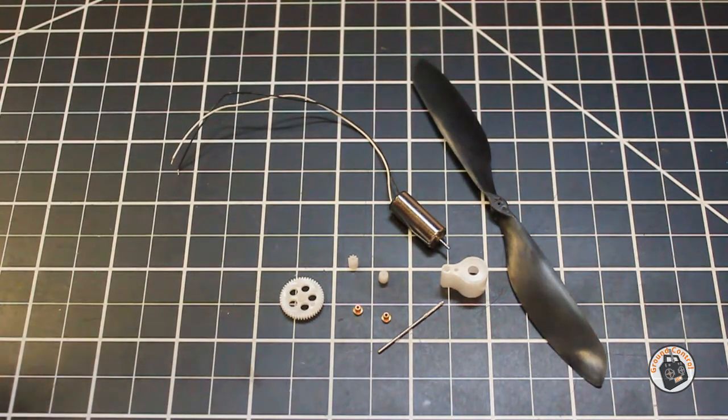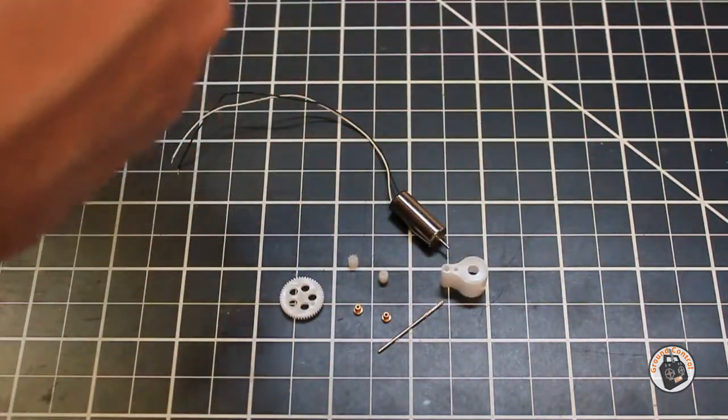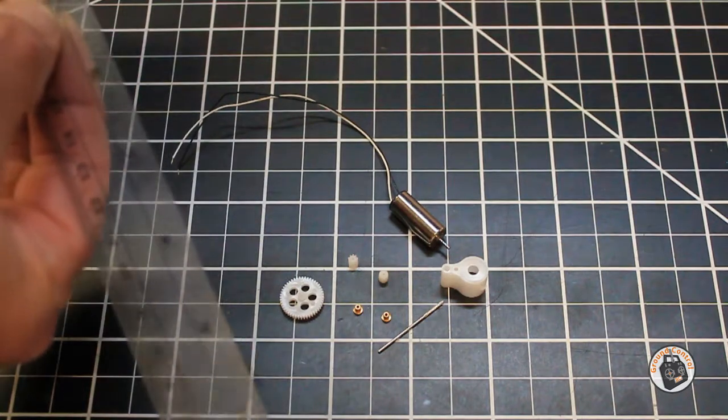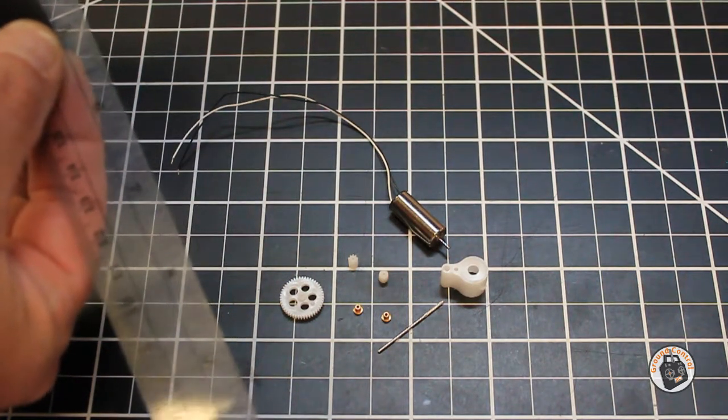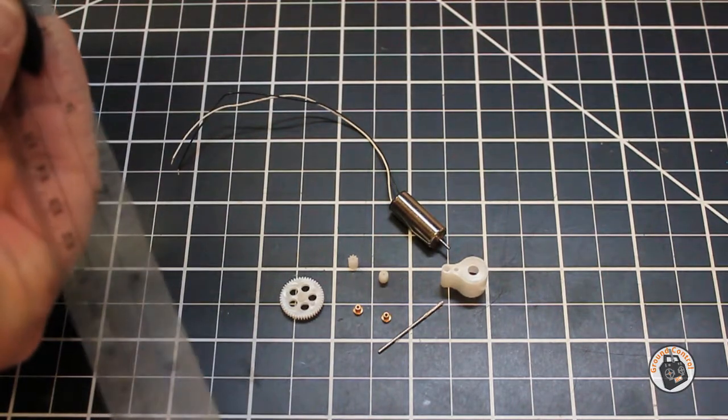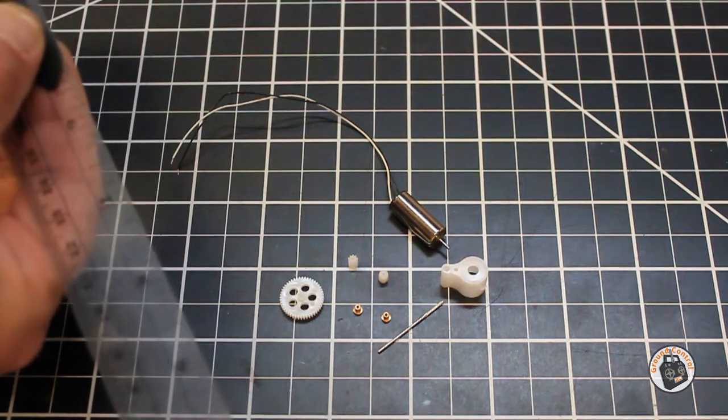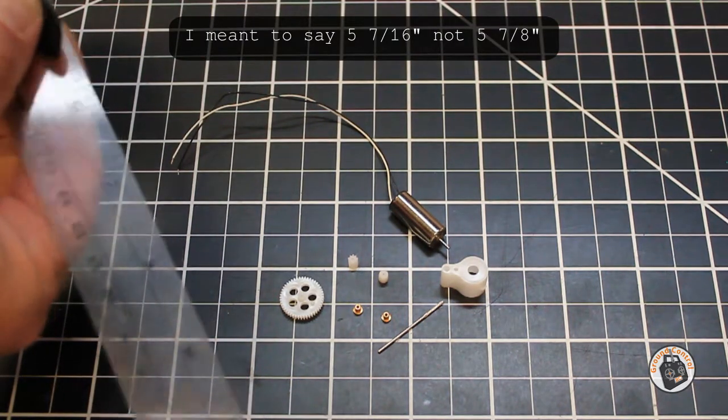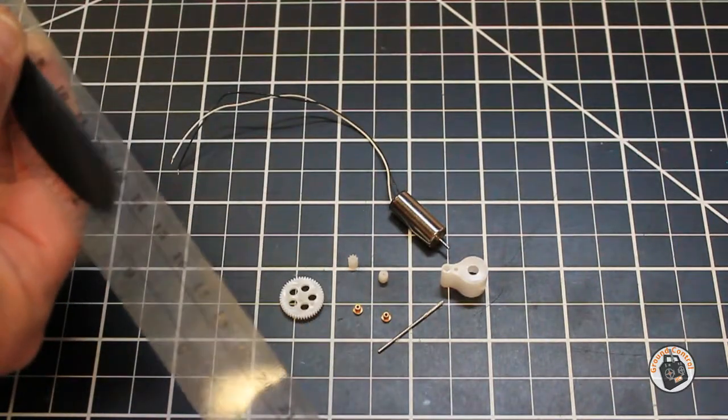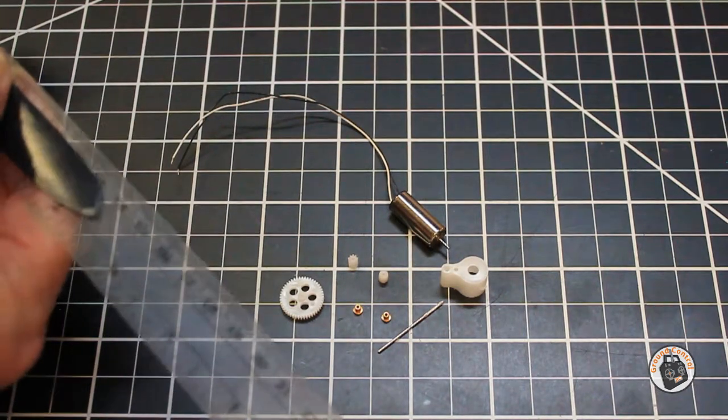Let's take a look at the size of prop that it comes with. This prop is approximately five and a half inches. Let me move it up here. Five and seven-eighths. So it's five and seven-eighths diameter. In the metric system, it's about 140 millimeters.